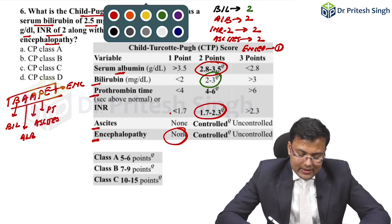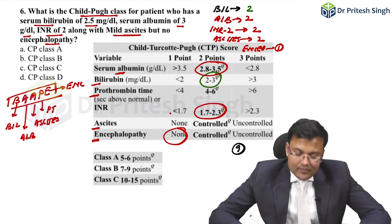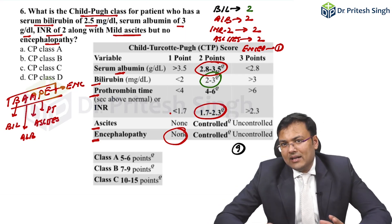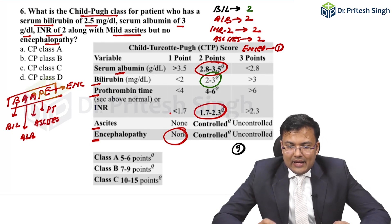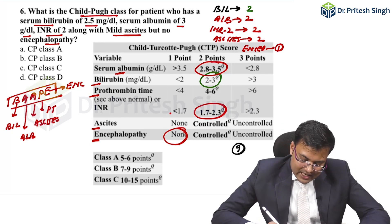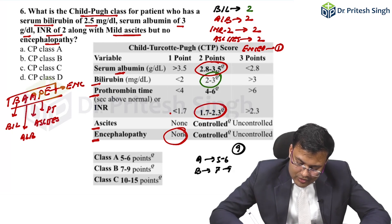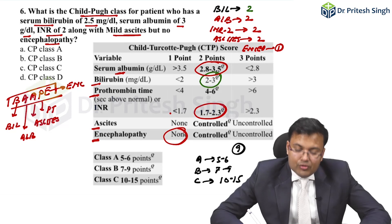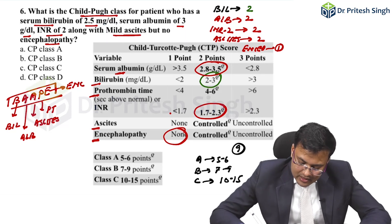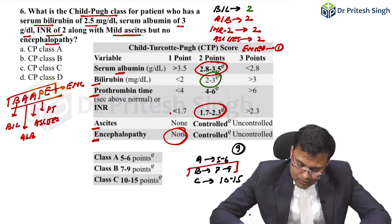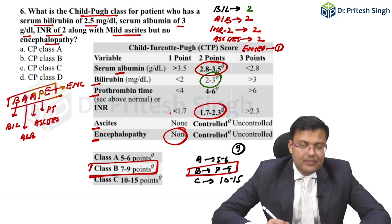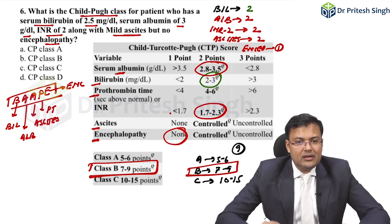Adding all scores together, the total is 9. Class A is 5–6 points, Class B is 7–9 points, and Class C is 10–15 points. With a total of 9, this patient is Child-Turcotte-Pugh Class B. The correct answer for this question is B.